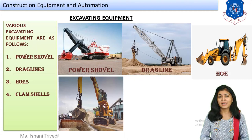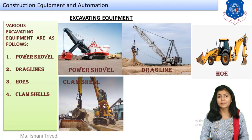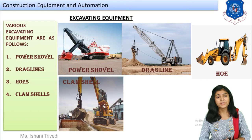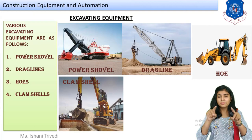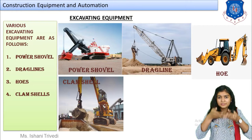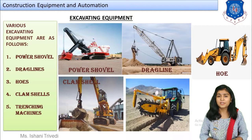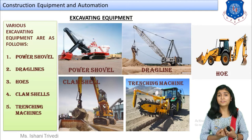Next we have clam shells. In clam shells, the bucket is different in shape — the key differences among excavating equipment are in the type of buckets and excavating blades. In the clam shell, two semicircular buckets are fitted together and collect soil in that manner. This equipment is generally used for diaphragm wall construction when excavation is required.